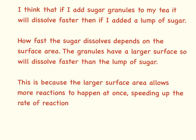In this example, I'm adding sugar to my tea and I've got granulated sugar and I've got lumps of sugar. A really basic thing to say would be: I think if I add sugar granules to my tea it will dissolve faster than if I added a lump of sugar. If you want to develop this and get more marks, you need to say that how fast the sugar dissolves depends on the surface area — that the granules have a larger surface area so they dissolve faster than the lumps.